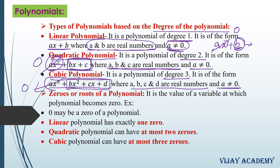There is one more type: the biquadratic polynomial, where the degree is 4.